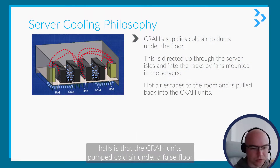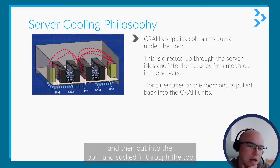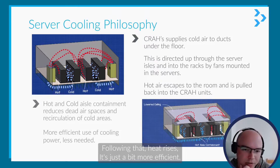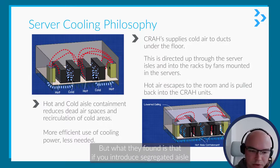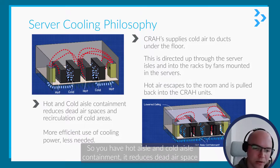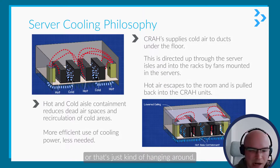The philosophy inside the halls is that CRAH units pump cold air under a false floor and bring it up through alternating aisles. This is then fed into the servers, out into the room, and sucked in through the top following the heat as it rises. What they found is that if you introduce segregated aisles — hot aisle and cold aisle containment — it reduces dead air space and prevents recirculation of air that hasn't gone through a server.